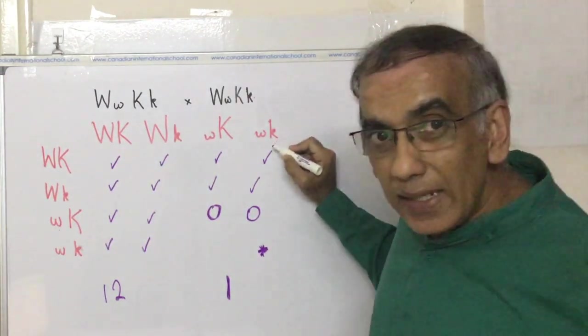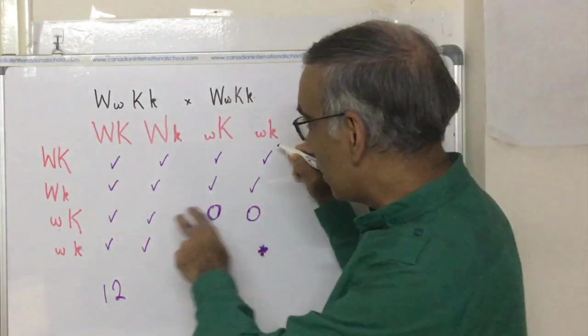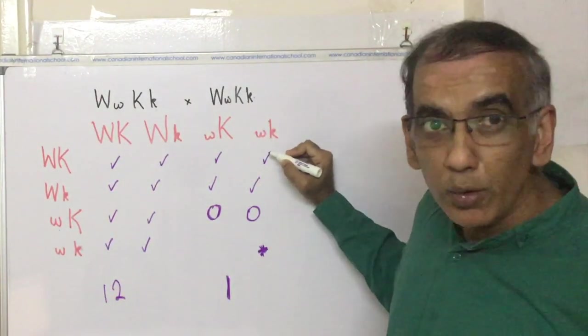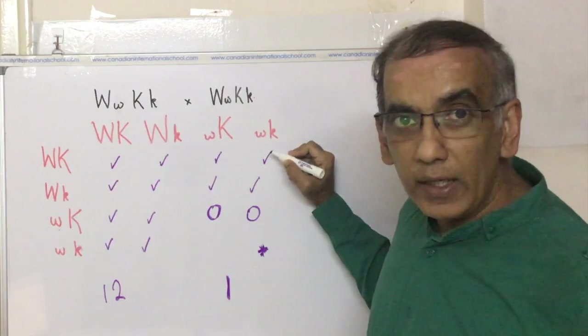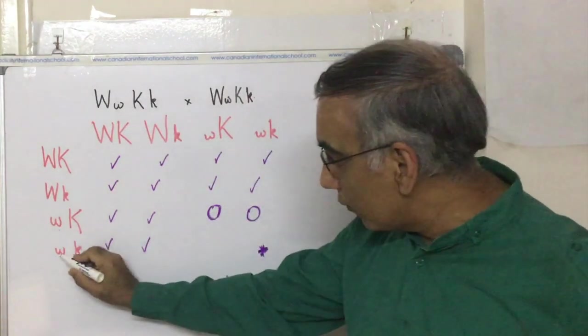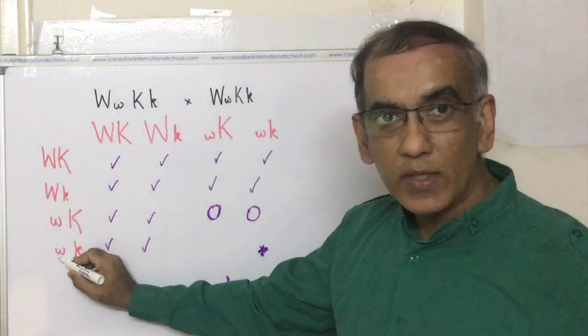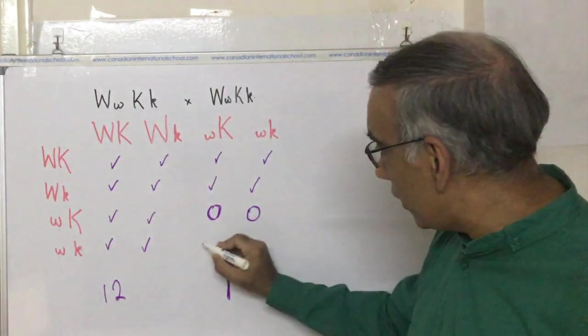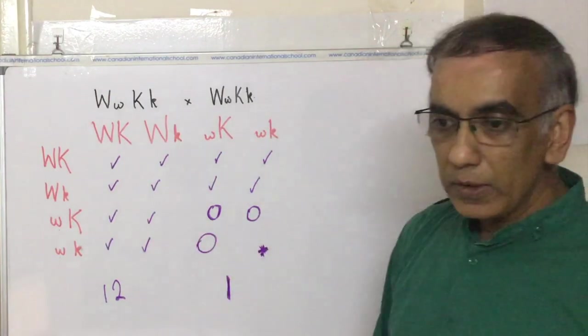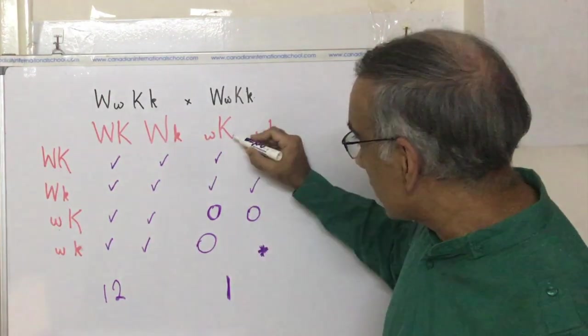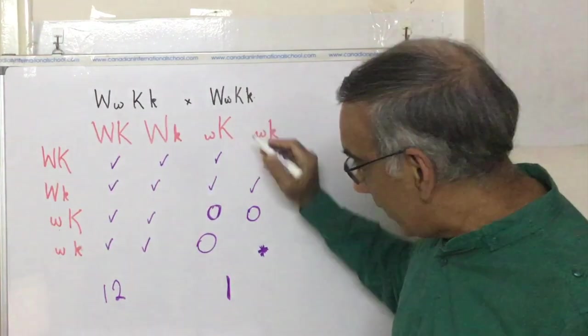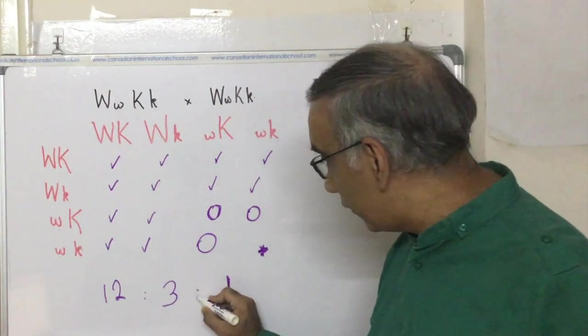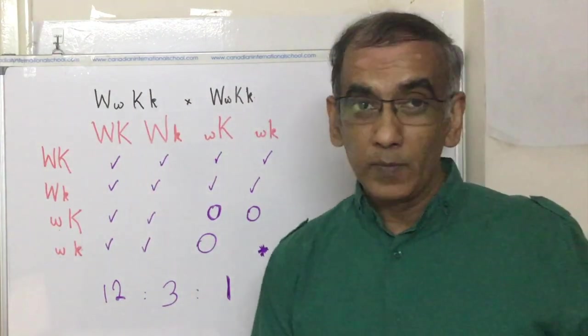So that suggests the big K, in the presence of homozygous for the little W, gives you the smooth-haired dog, and the long-haired dog could only arise when you have homozygous recessive for both. This one is going to be smooth-haired because it has one big K, and that satisfies the ratio of 12 to 3 to 1. Unfortunately, no credit is given for this.